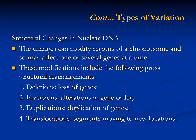Structural changes in nuclear DNA appear to be a major cause of somaclonal variation. The changes can modify large regions of a chromosome and so may affect one or several genes at a time. These modifications include the following gross structural rearrangements: deletion — loss of genes; inversions — alteration in gene order; duplications — duplication of genes; and translocations — segments of chromosomes moving to new locations.